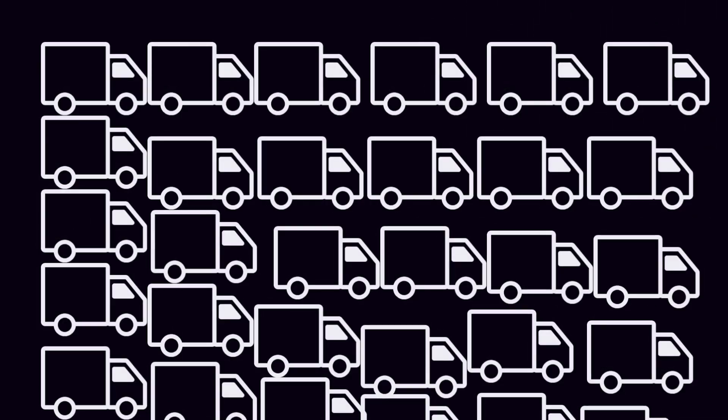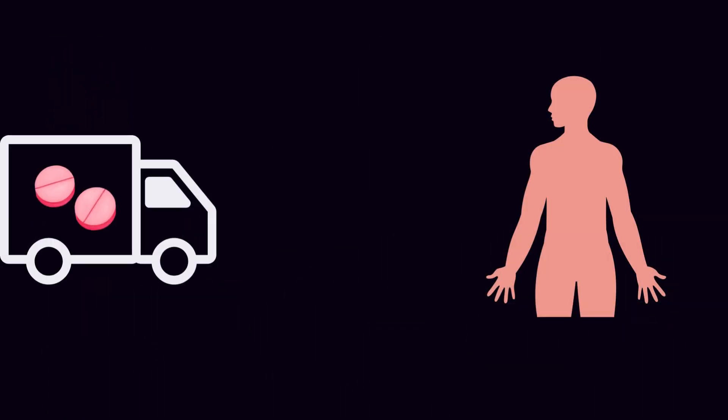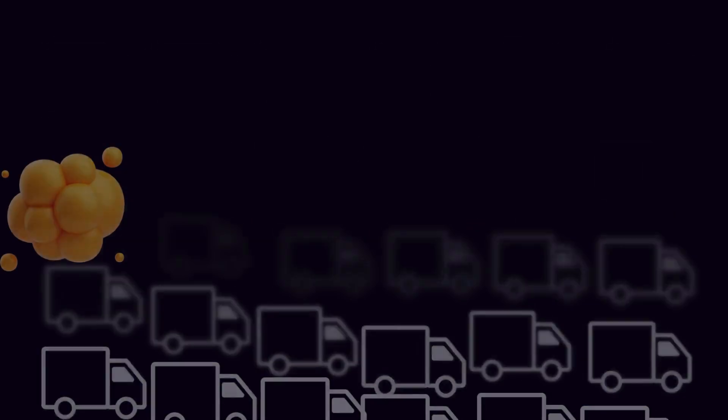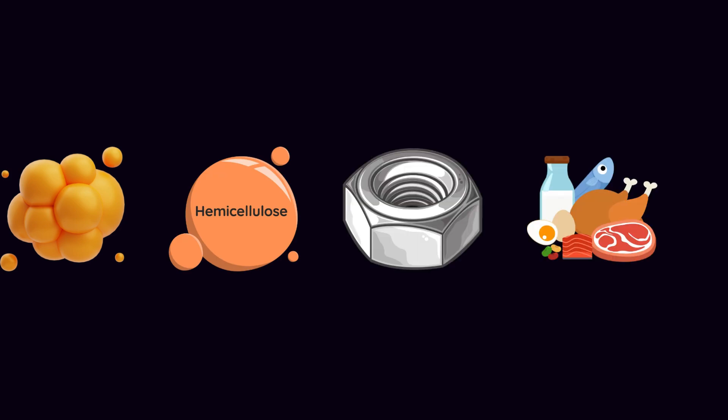At this scale, we can build structures that act like tiny delivery trucks, carrying medicine directly to where it's needed. These nanocarriers can be made from lipids, polymers, metals, or even proteins.